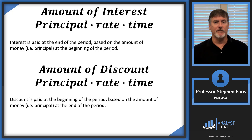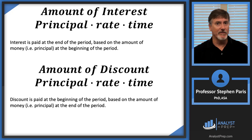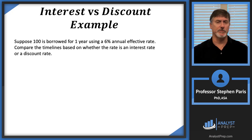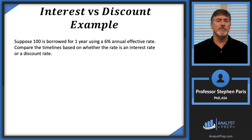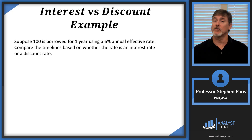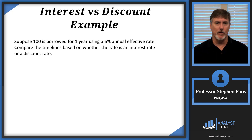That might be kind of confusing, so let's do an example. The amounts are calculated the same way — interest and discount are calculated the same way. Suppose you have $100 borrowed for one year at a 6% annual effective rate. Compare the timelines based on whether the rate is an interest rate or a discount rate. So I could have a 6% annual effective interest rate or a 6% annual effective discount rate.